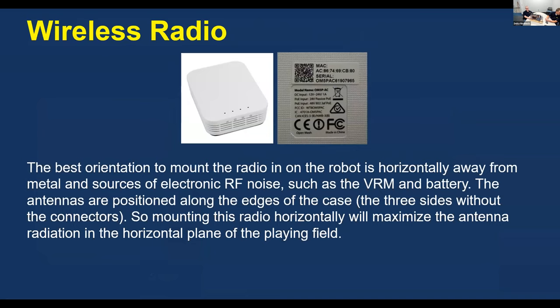This is the radio. The best way to mount this is horizontally and away from metal and sources of RF noise, such as the VRM and the battery. The antennas are positioned along the edges of the case, so mounting the radio horizontally will maximize the antenna radiation in the horizontal plane on the field. It's important that this thing gets power all the time — if it loses power, it's 45 seconds before it can reboot, meaning you lose your connection for 45 seconds if this isn't wired properly.